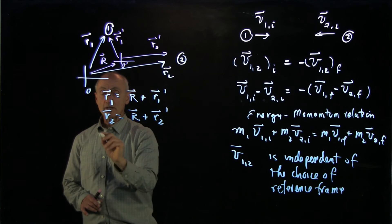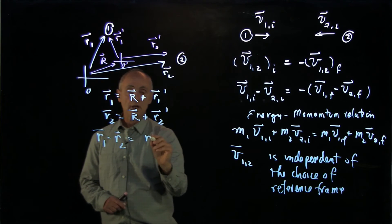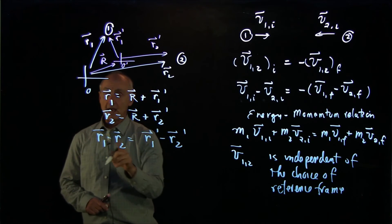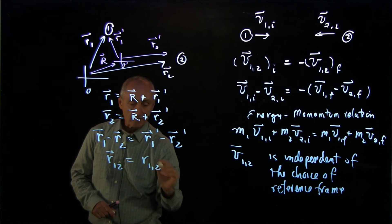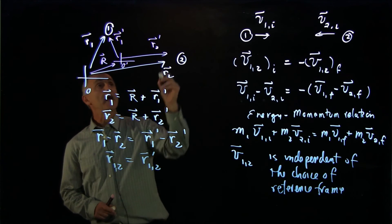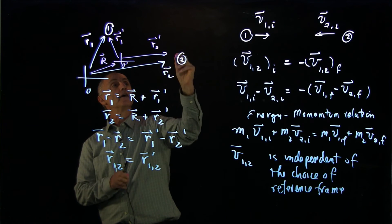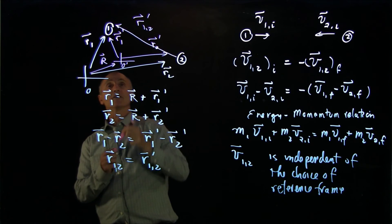And now if we subtract these two equations, we have r1 minus r2 equals r1 prime minus r2 prime. And this shows us that the relative position vectors are this one from 2 to 1.